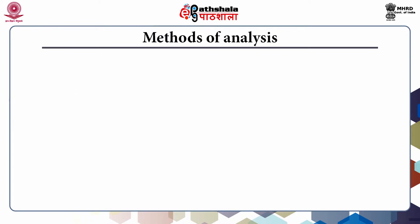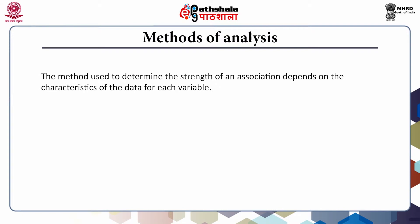The method used to determine the strength of association depends on the characteristics of the data for each variable. Two measures are commonly used: correlation and chi-square methods.